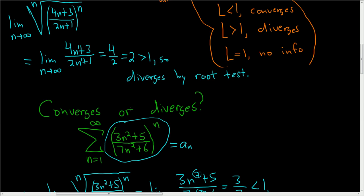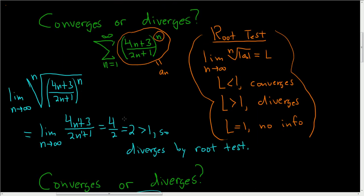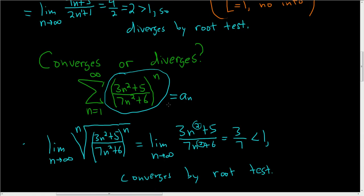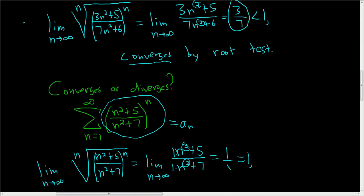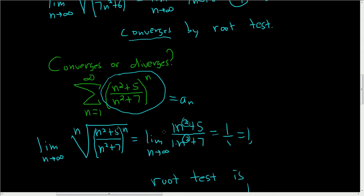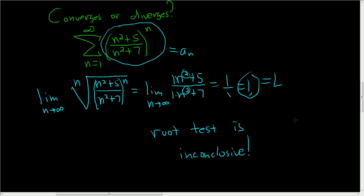To recap: in the first example, L was 2 — bigger than 1, so it diverged. In the second example, L was 3/7 — less than 1, so it converged. In the last example, we got L equals 1, and when L equals 1, the root test is inconclusive.